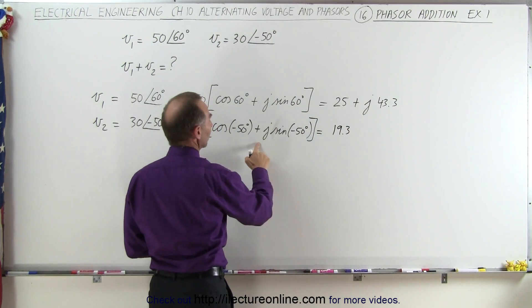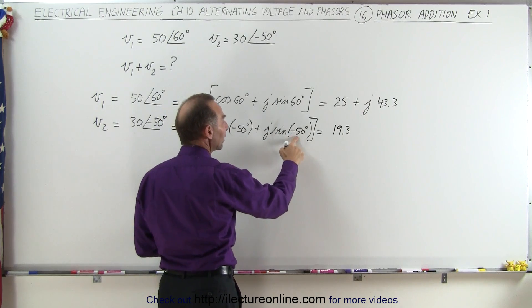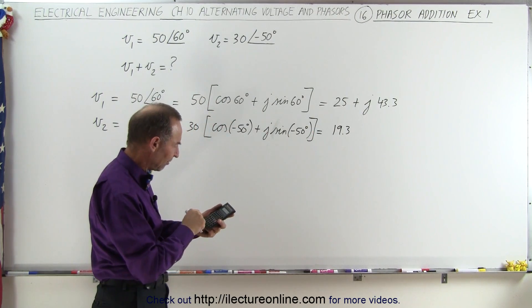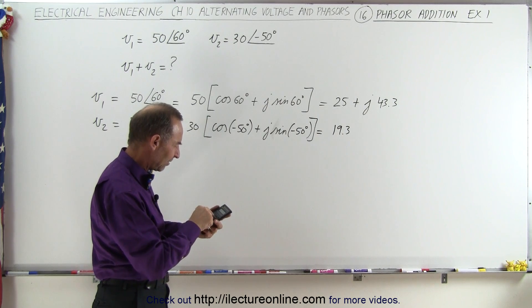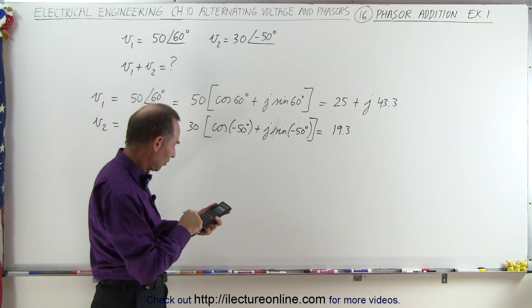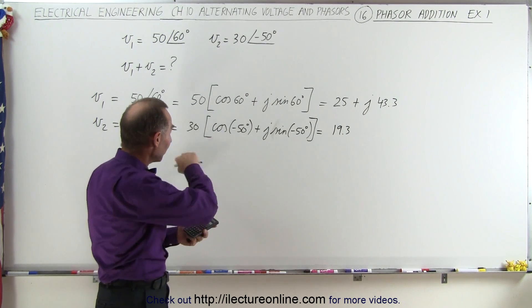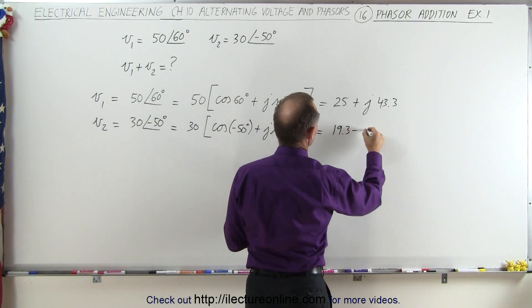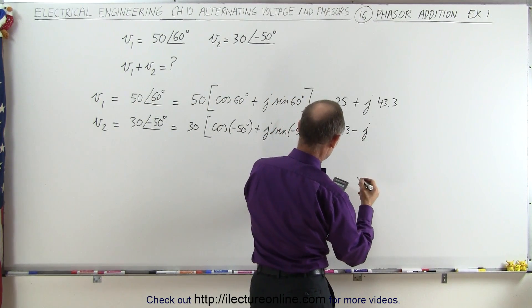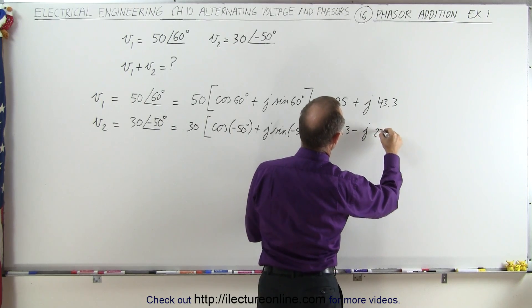Now here we have to be careful, because the sine of a negative angle is the negative sine of the positive angle. So we take the sine of 50, multiply that times 30, but now we have to multiply by negative one, so that becomes minus j times 23.0.